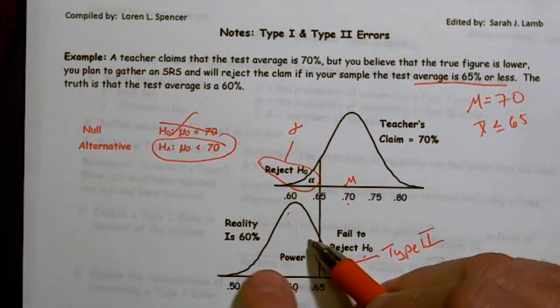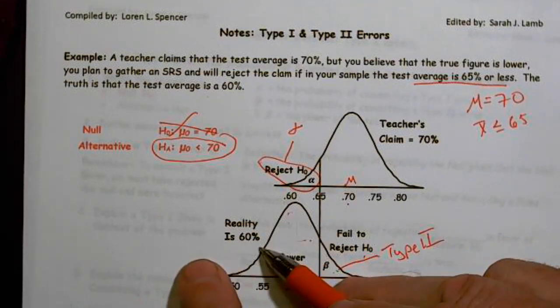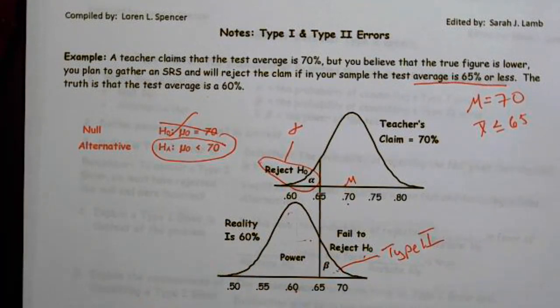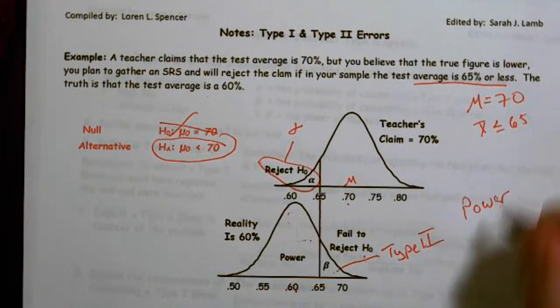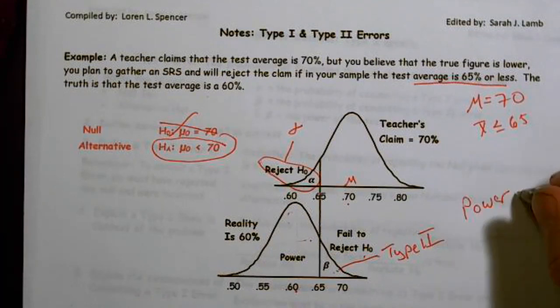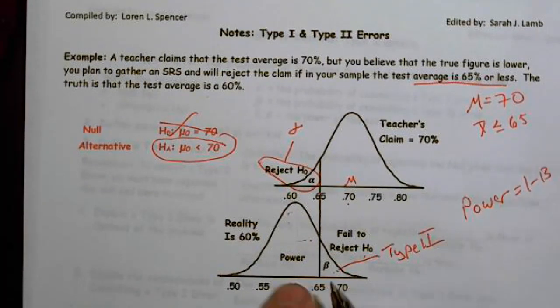This area down here below that is power. And power is correctly rejecting. And in this case, you should be rejecting. And remember, power equals 1 minus beta. And we can see that this area under the curve is 1, and 1 minus beta gives us our power.